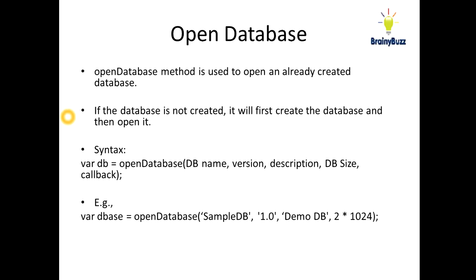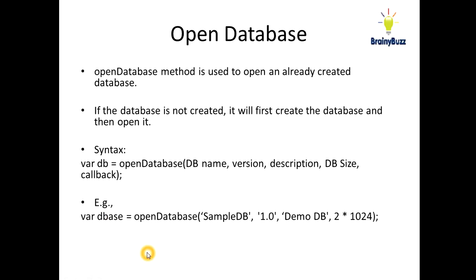This will be our syntax. Suppose I have a variable DB — you can say DB is equal to OpenDatabase. First of all, you have to give the database name that you want to open, after that the version, then the description, then DB size, and then the callback. So suppose 'sampleDB' is the name, a version, 'demoDB' is the description, and the size. If your sampleDB is already created, it will be referred to in this variable; otherwise, your sampleDB will be created and a reference will be given to this DB variable.